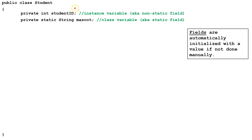You'll notice that we haven't set a value for either of these variables. With local variables, we'd have to give it a value before we accessed it. But fields will set their own values if we don't set it for them. So this one is an int, so it'll automatically default to zero. This one's a String — a String is a type of object, and all object fields will default to null. If you want to learn more about what null means, check the video in the upper right-hand corner of this screen.